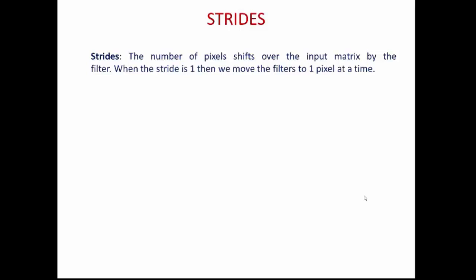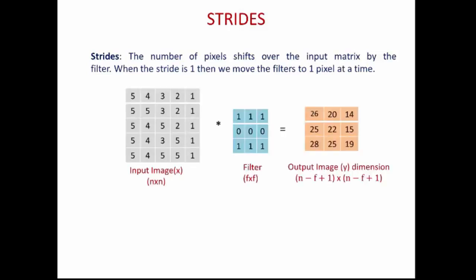When the stride is 1, we move the filter 1 pixel at a time on the input matrix. For example, an n×n input image convolved with an f×f filter produces an (n−f+1)×(n−f+1) output.